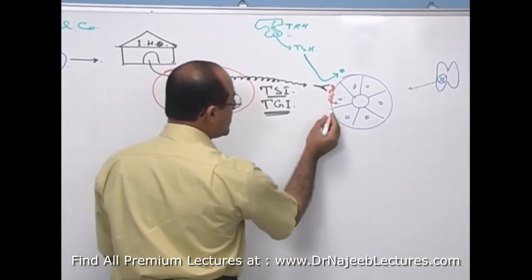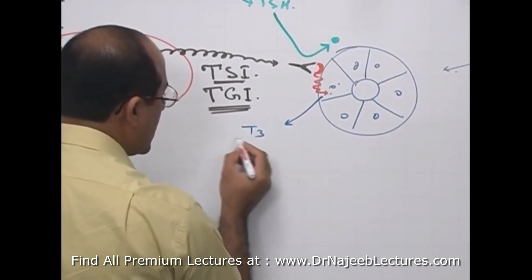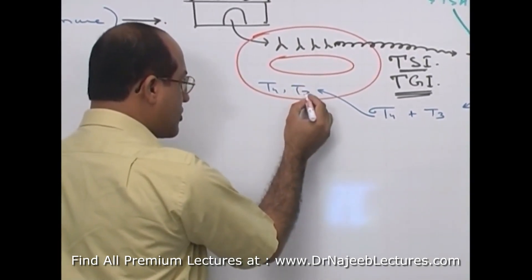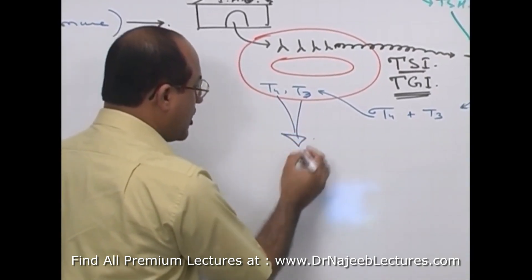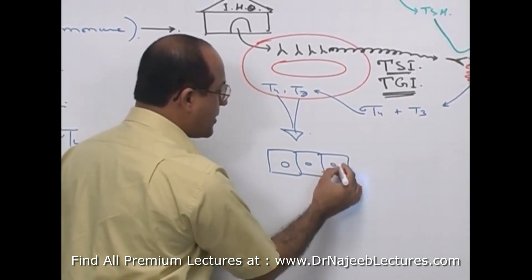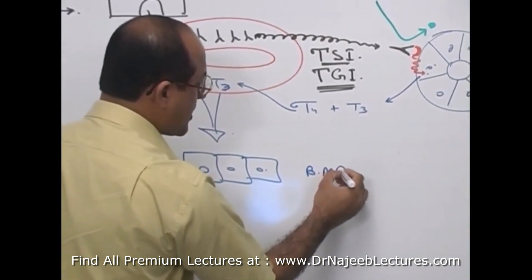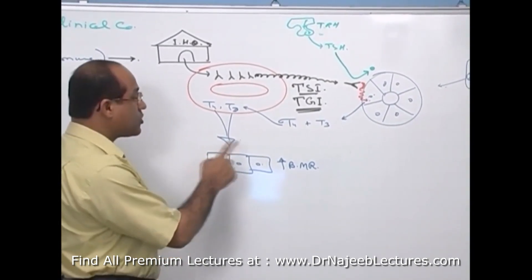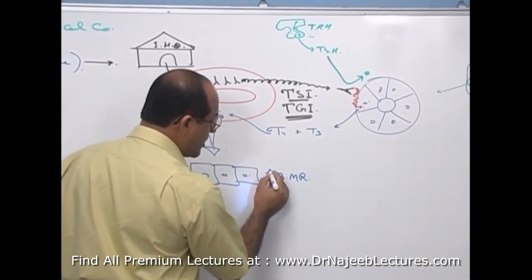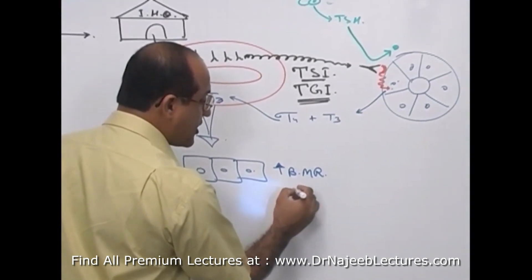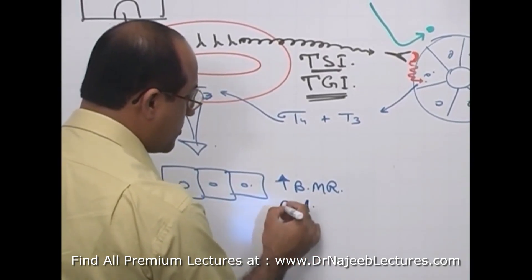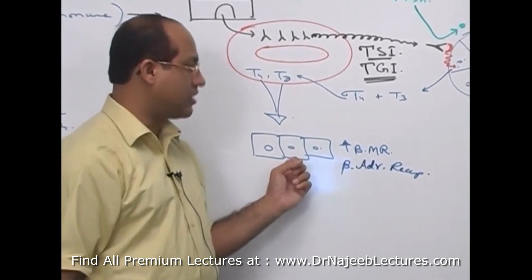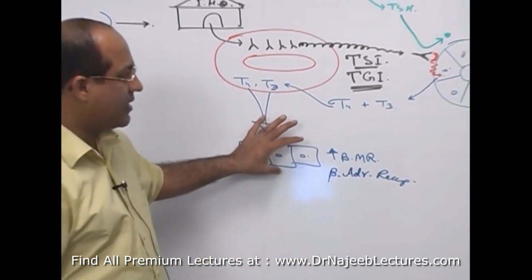The result is excessive production of T3 and T4. This T3 and T4 circulating in the blood produces metabolic actions on peripheral cells: basal metabolic rate (BMR) is increased in all tissues except the gonads, brain, spleen, and lymph nodes. Additionally, there is more responsiveness to adrenergic drive, as beta-adrenergic receptors are expressed in excessive numbers under the direction of T3 and T4.